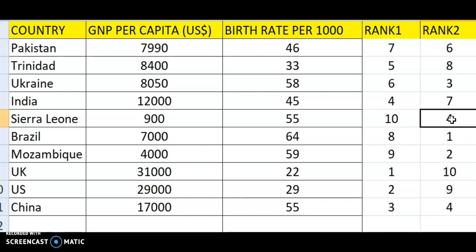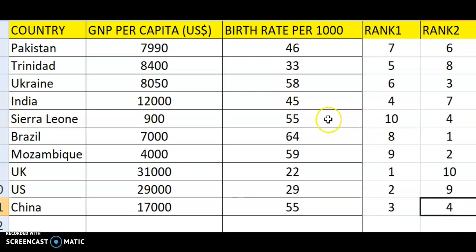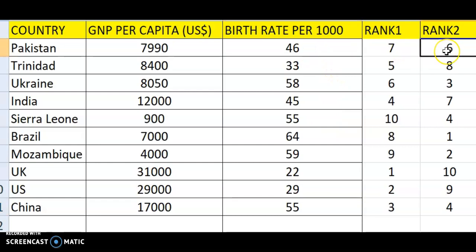When two values tie, the rank after them skips ahead by two notches. We already have ranks 1, 2, and 3. Sierra Leone and China both tie at rank 4. So the next value — 46 for Pakistan — gets rank 6, not rank 5. This ensures the total ranking scheme still sums to the correct total of 10.